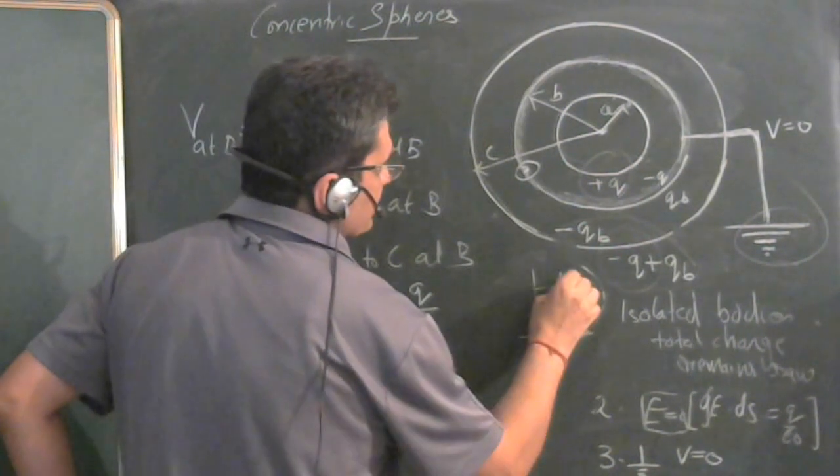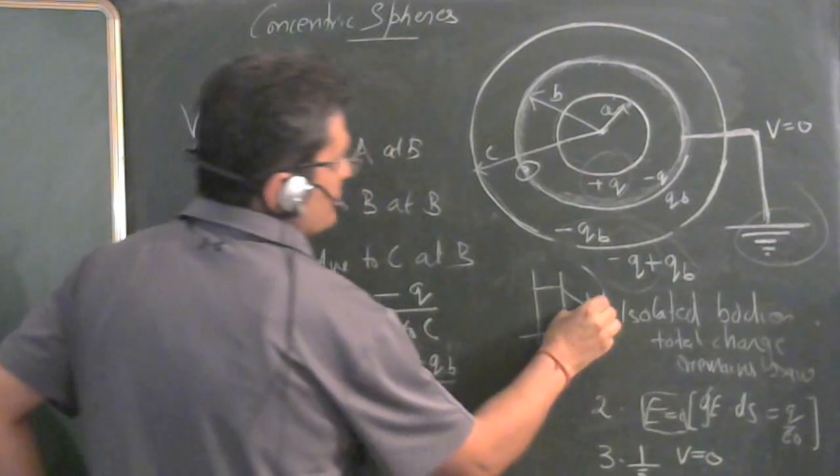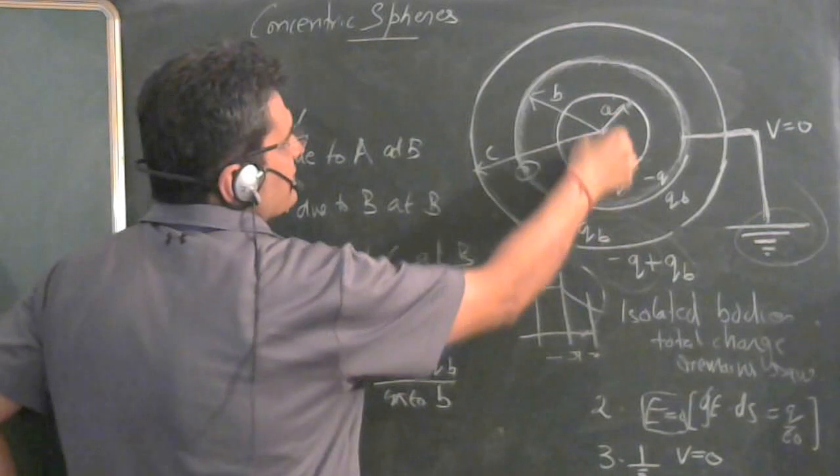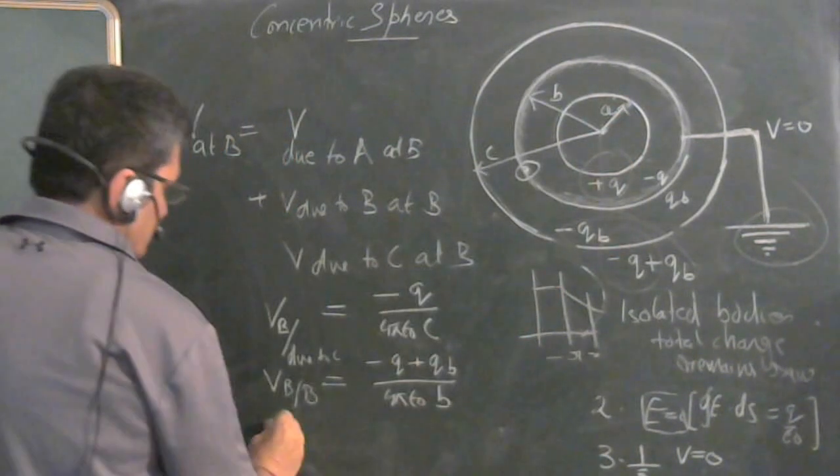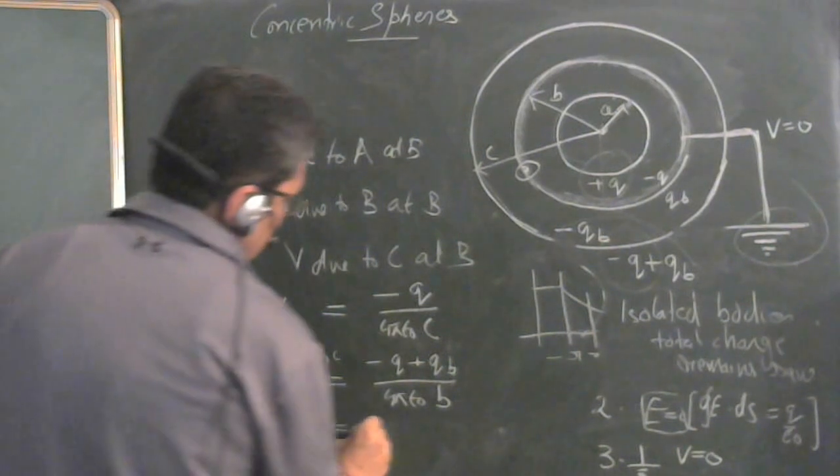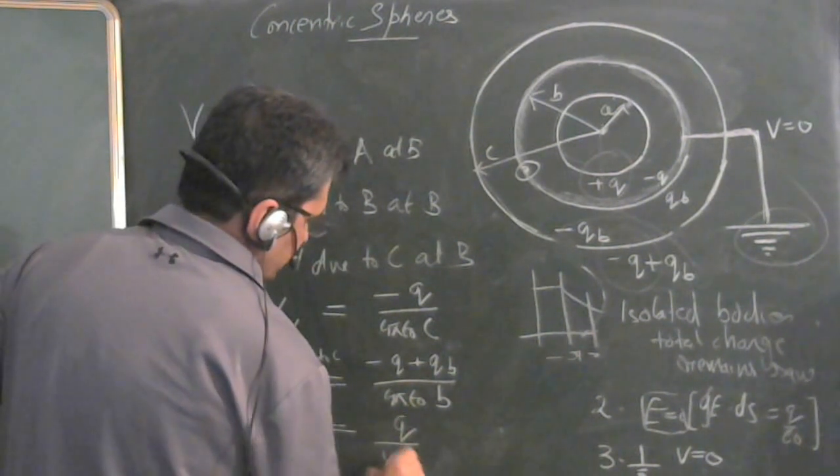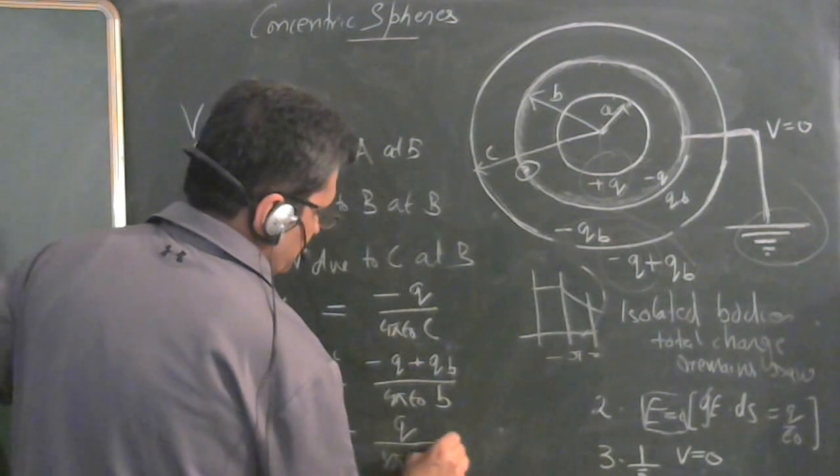For outside this sphere as I showed, potential will be like this. So at any radius, you have to apply that radius. So here radius is B. So V A at B is equal to Q upon 4 pi epsilon zero B.